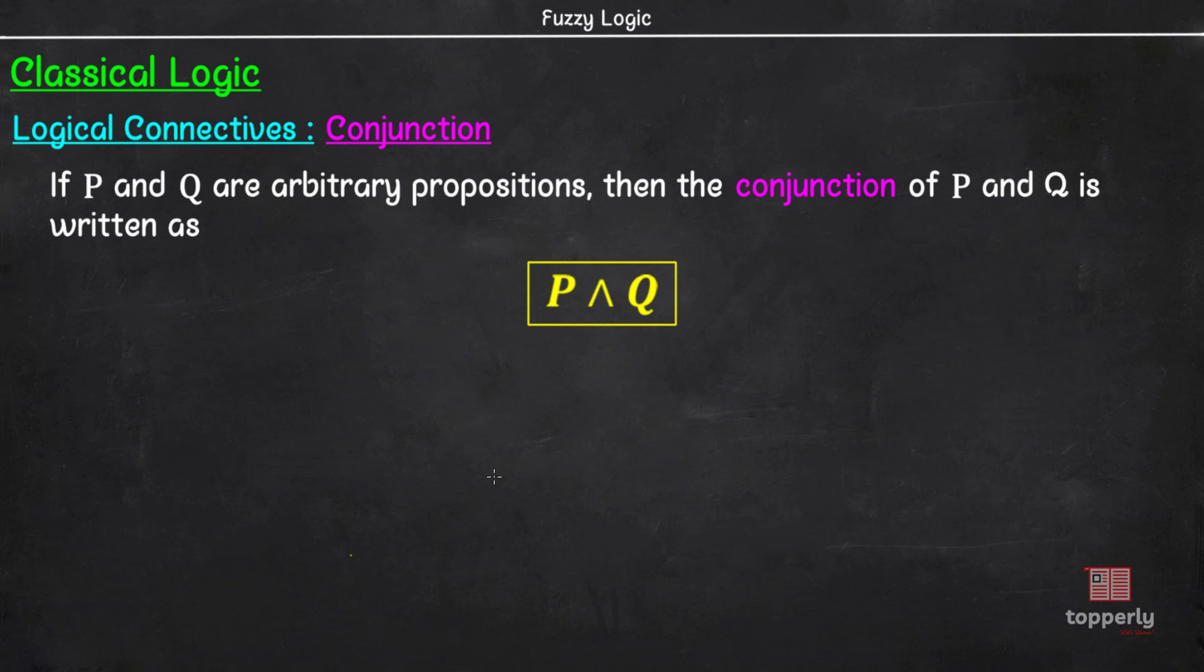Now, let us consider a statement P that is true and a statement Q that is false. Then P conjunction Q is 2 is a prime number and 2 is an odd number. We know that this statement is false. So, we can say that when P is true and Q is false, P conjunction Q is also false. Next, consider the situation where P is false and Q is true. Here, again the statement P conjunction Q is false. So, when P is false and Q is true, P conjunction Q is false.